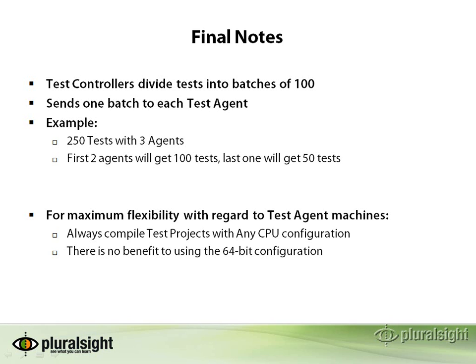It's also worth compiling your actual test project using the AnyCPU configuration. There's no benefit to using the 64-bit config, so you'll be able to run it on more varieties of test agent machines, including ones that are running on 32-bit processors, if you use the AnyCPU config.